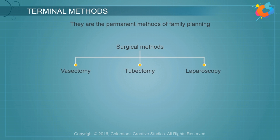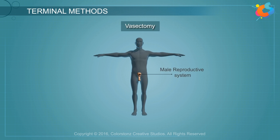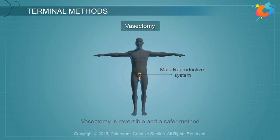Vasectomy is involved in the male reproductive system. This method involves the surgical removal of a small portion of the vas deferens to block the passage of sperms to the penis. Vasectomy is reversible and a safer method.